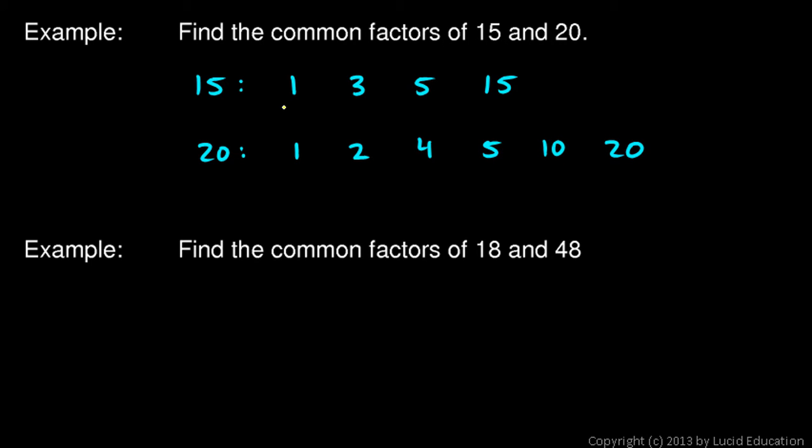And then just find the numbers that are in this list and in that list. The number 1 shows up in both lists and the number 5. So 1 and 5 are the common factors of 15 and 20. Those are the numbers that 15 and 20 have in common as factors.